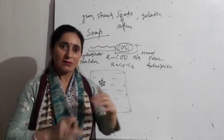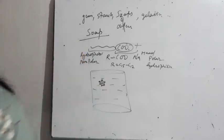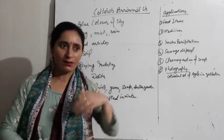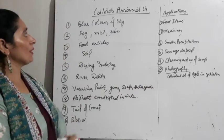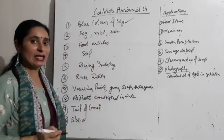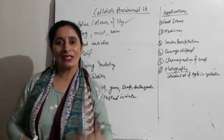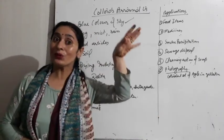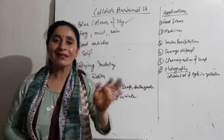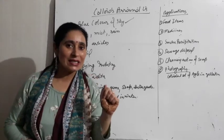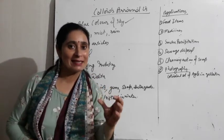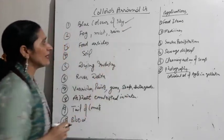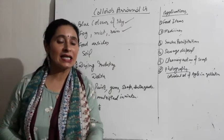Colloids around us — main bahut baar discuss kar chuki hoon. Blue color of sky — the best example. Blue color ki wavelength sabse small hoti hai, isliye due to Tyndall effect, when light is scattered by dust particles of colloidal size in the atmosphere, sky appears blue. Then fog, mist, rain — ye saare natural colloids hain. Fog ke andar water-in-air type colloidal solution hai.